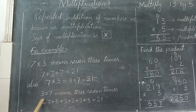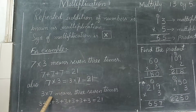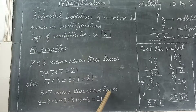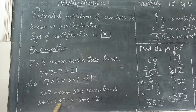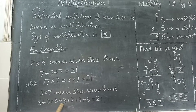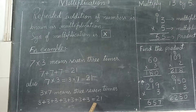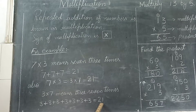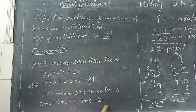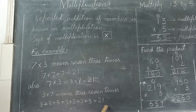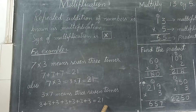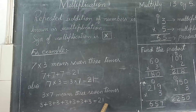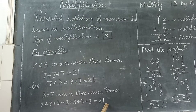Iska answer bhi twenty one hi aayega. Kyunki aap jaante hain that three multiplied by seven means three seven times — yahan aapke paas aa jaati hai seven threes, jo bhi twenty one hai, aur three sevens bhi twenty one.